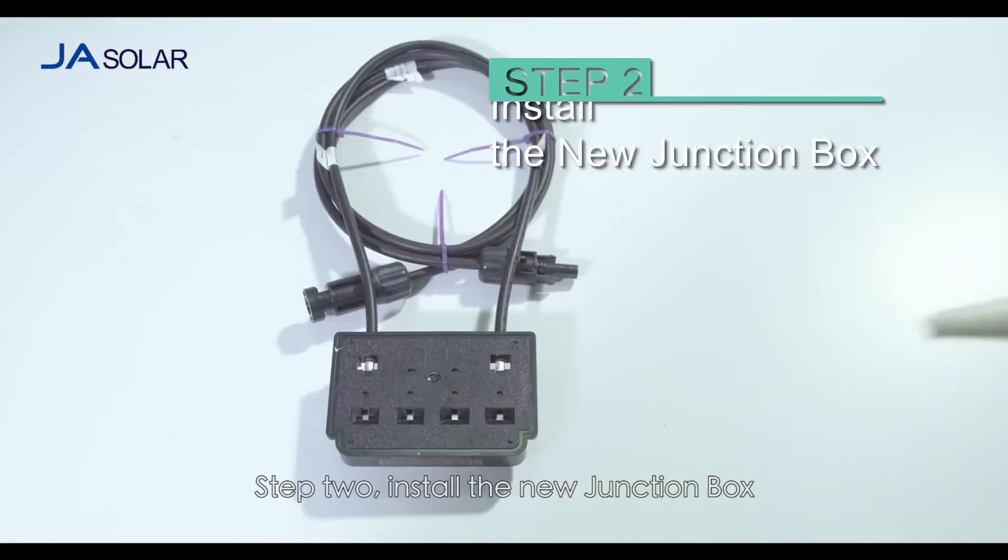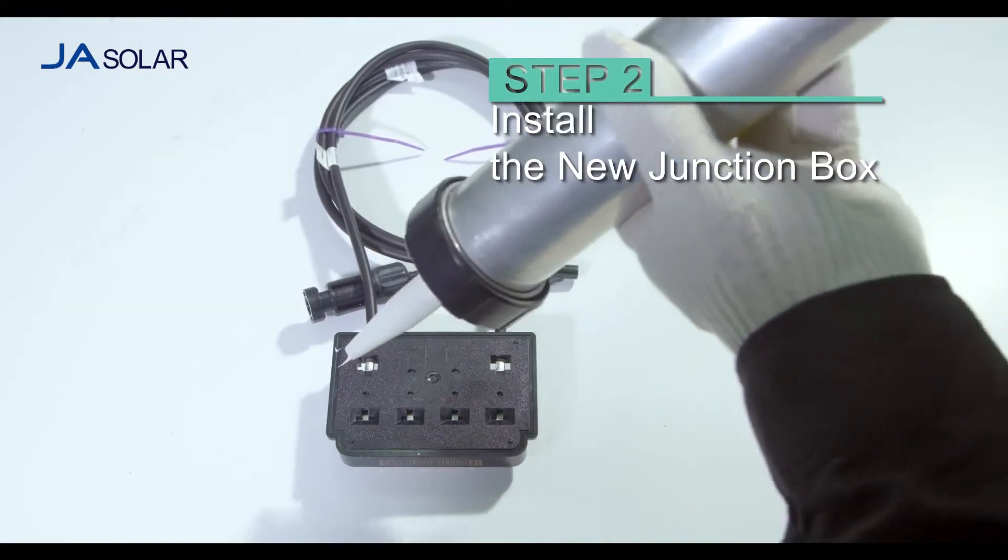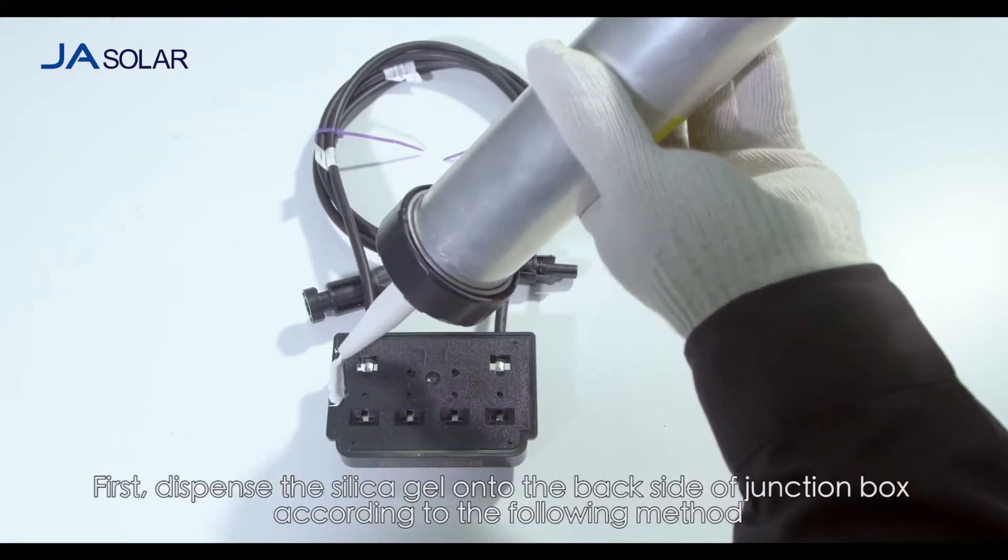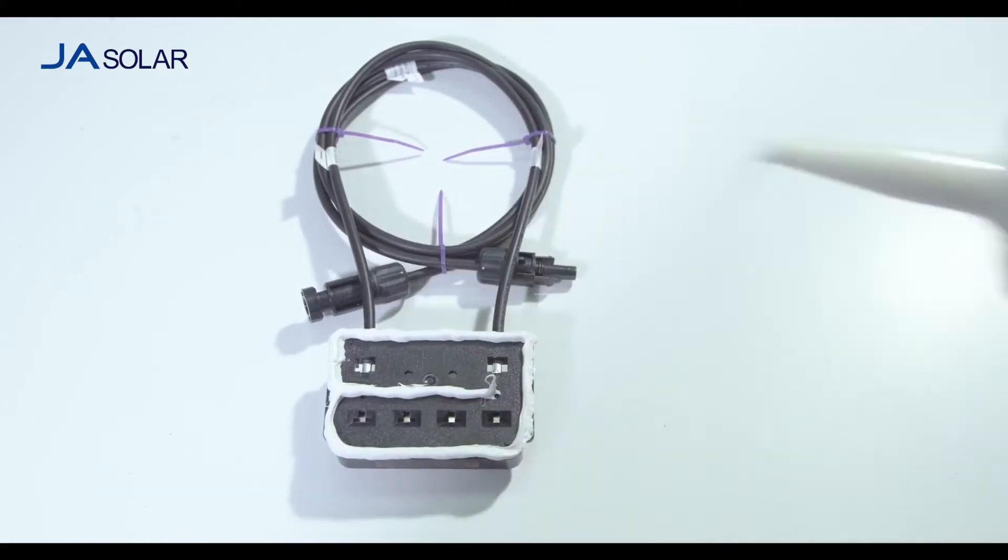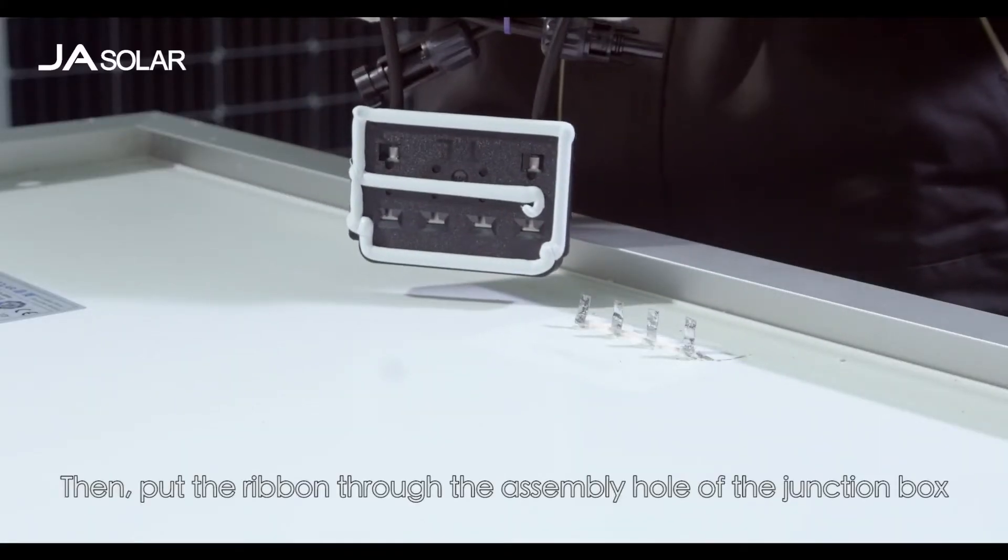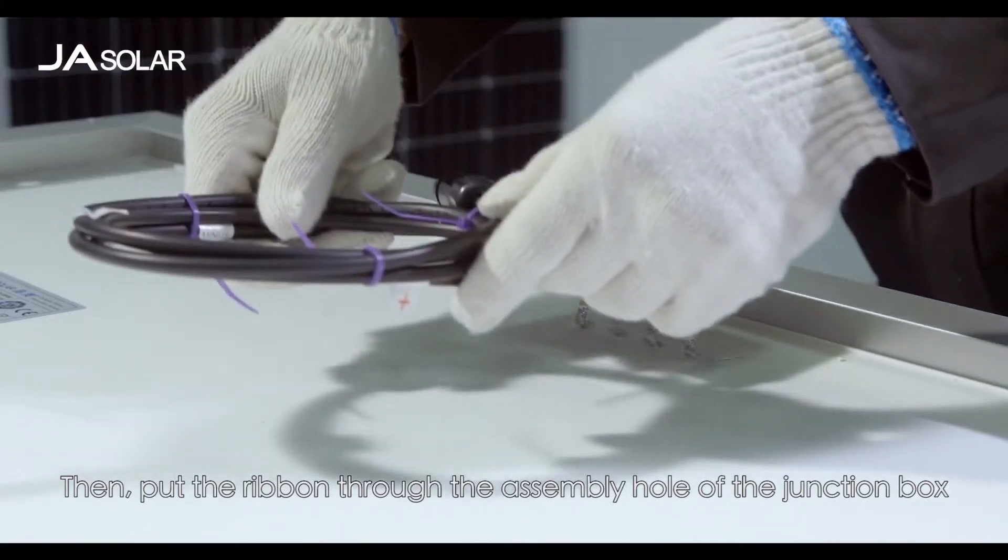Step 2: Install the new junction box. First, dispense the silica gel onto the back side of junction box according to the following method. Then, put the ribbon through the assembly hole of the junction box.